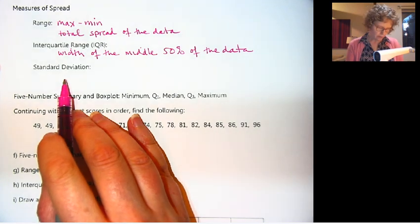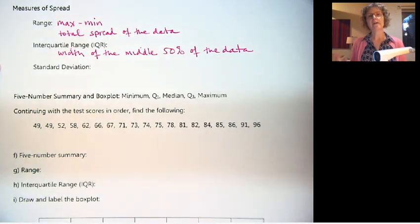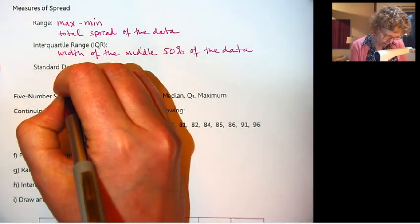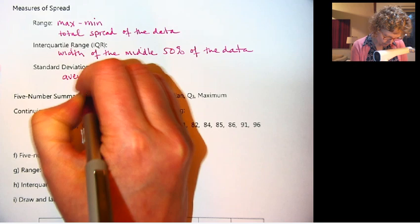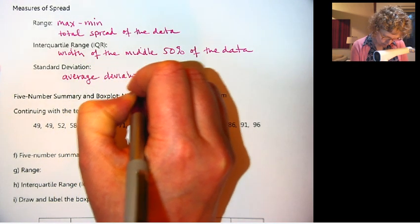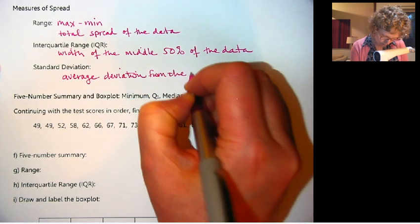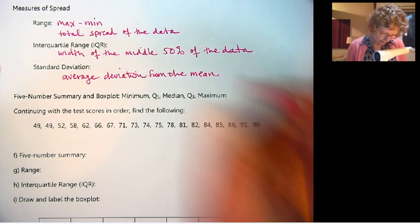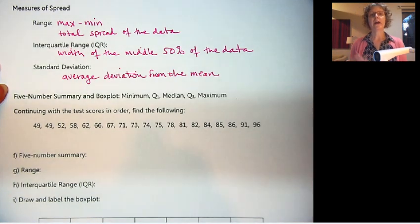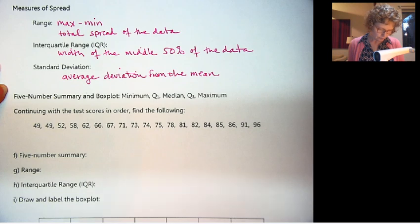Now, the standard deviation is another measure of spread. You can think of it as the average deviation from the mean. So it's on average how far away are values from the mean.